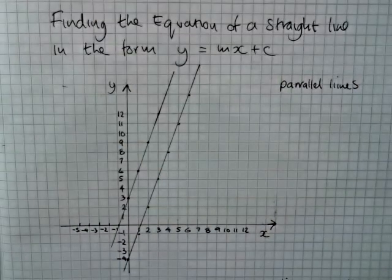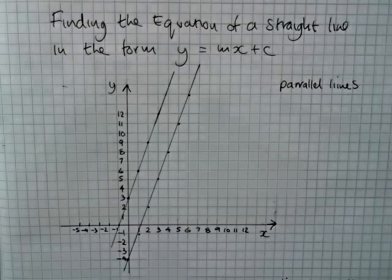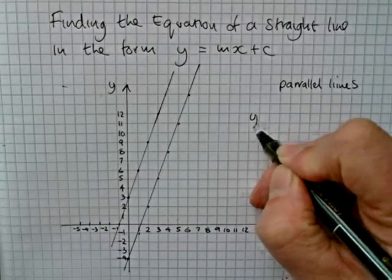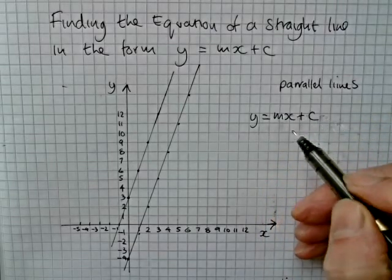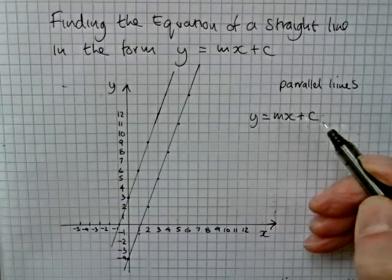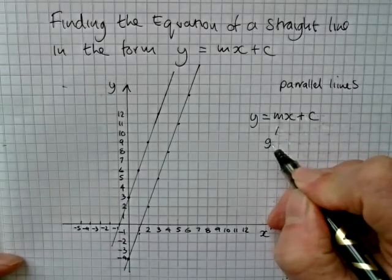All right, so we're going to look at finding the equation of a straight line in the form y equals mx plus c. You should know that m is the gradient and c is the y-intercept.